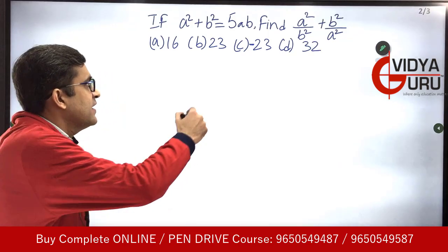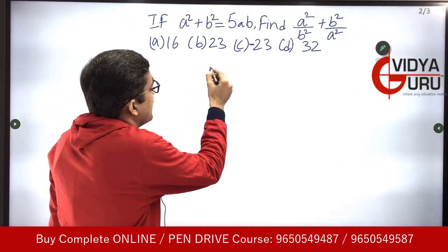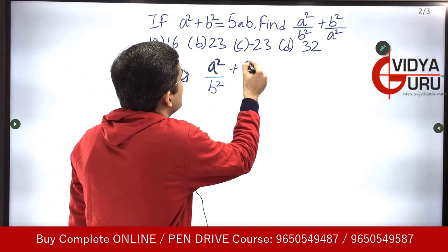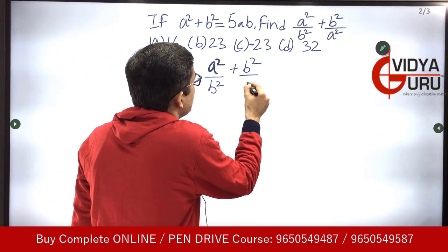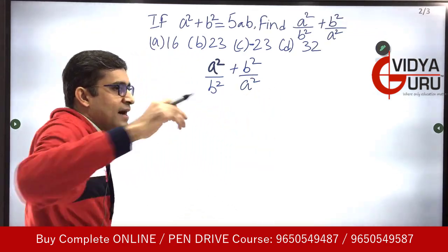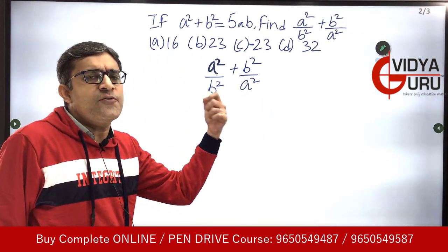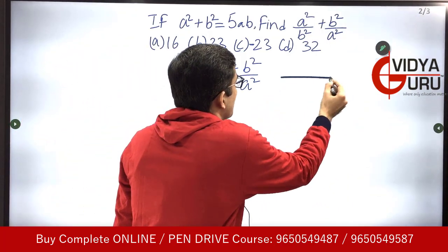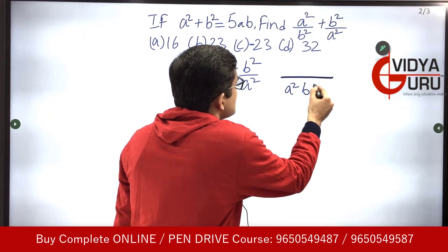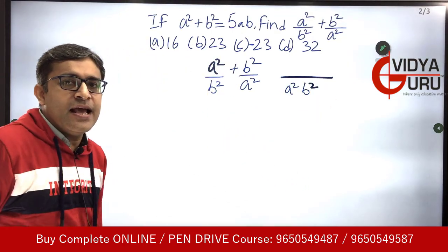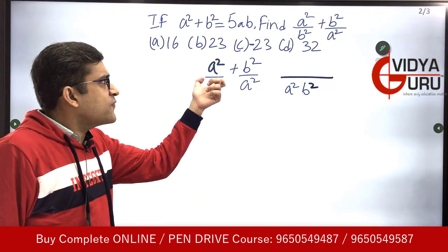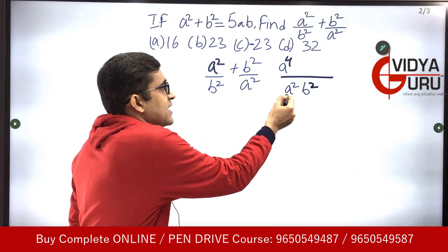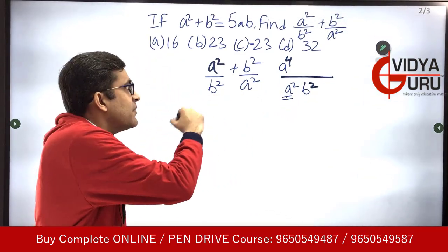So we have the expression a²/b² + b²/a². We'll have to take the LCM. The LCM is going to be a²b², and then in the numerator, a² multiplied with a² will become a raised to power 4 because the powers get added.